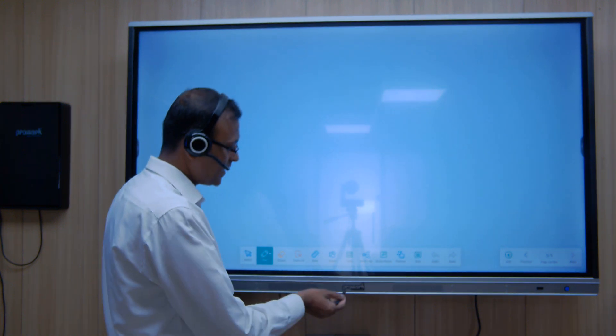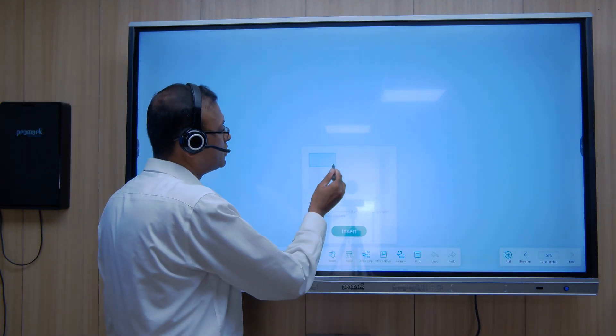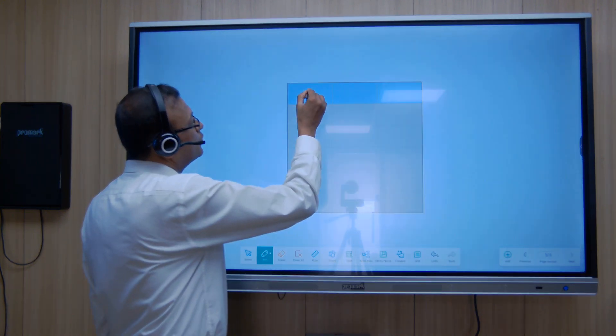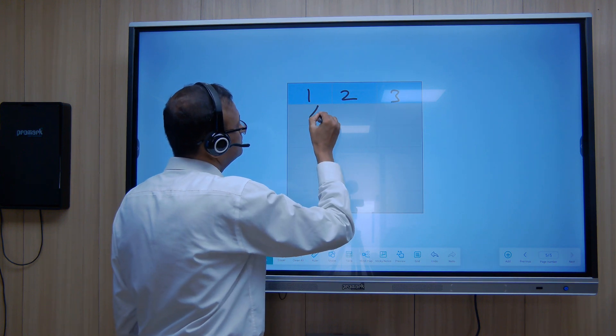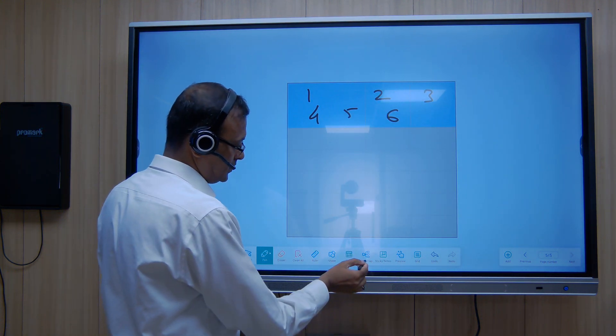Let me add another page to this. And then we also have a function which is called tables, whereby we can choose the number of rows and columns. And we can insert it and we can write.